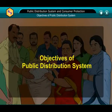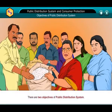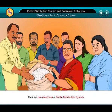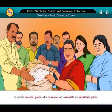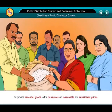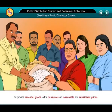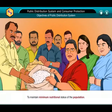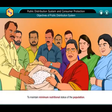There are two objectives of the public distribution system: to provide essential goods to the consumers at reasonable and subsidized prices, and to maintain minimum nutritional status of the population.